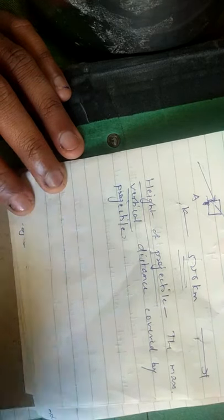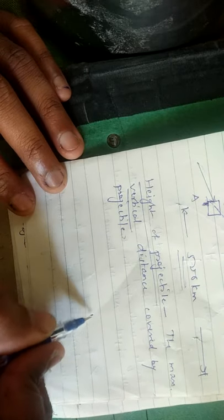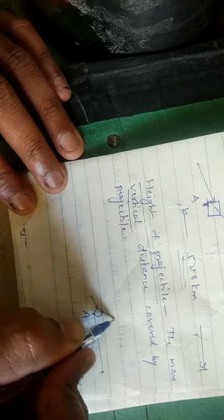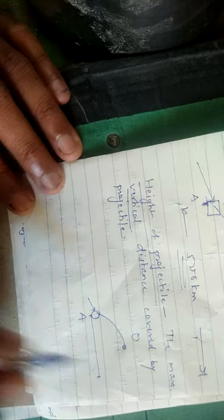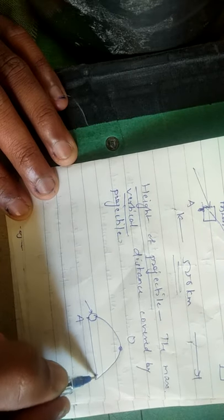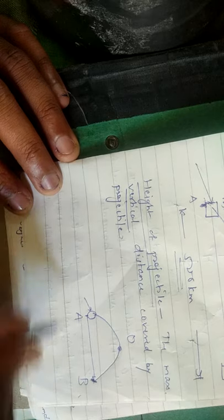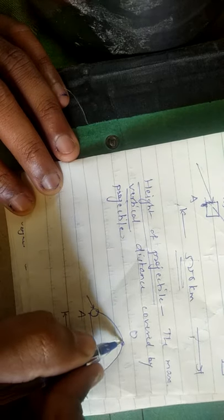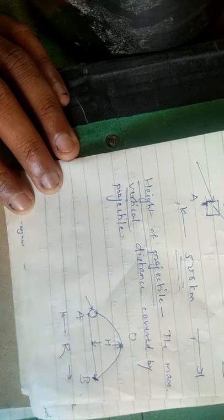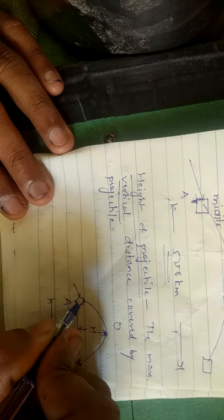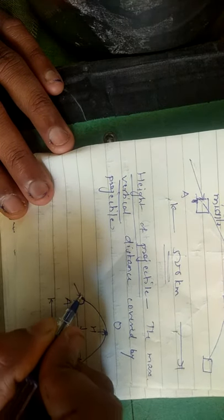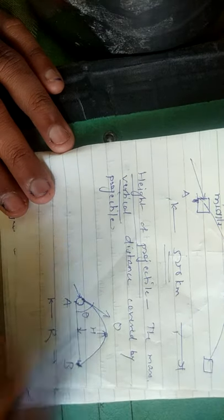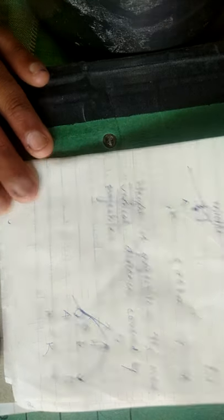Rather than drifting between pages, let me draw the diagram again. This is point A from which the ball is launched into air. It reaches point O, comes down, and hits point B. So A to B is the maximum horizontal distance — that is range. And the vertical distance from O to the ground is the maximum vertical distance — that is height. The angle made by the line of travel with this horizontal is the angle of projection theta.